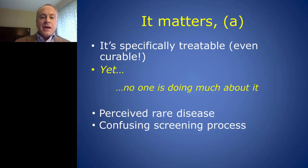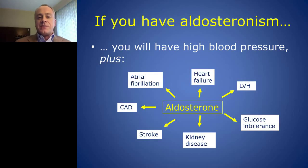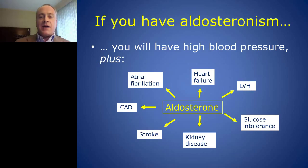It's often perceived as a rare disease, and it can be confusing to even screen for it. The second and perhaps most important reason is that aldosterone can be a bad player beyond blood pressure. If you have primary aldosteronism, you will have high blood pressure, but you will also be predisposed to developing a multitude of conditions, including aggressive heart failure, increased left ventricular hypertrophy, kidney disease, stroke, and coronary disease — all contributing to decreased mortality even compared to patients without aldosteronism at the same level of blood pressure control.